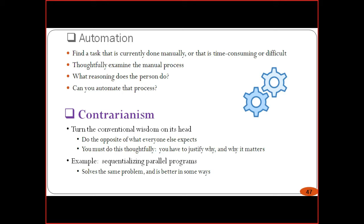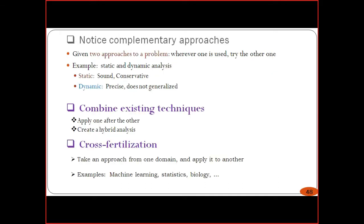Similarly, sequential and parallel programs can solve the same problem in better ways. For example, every country is trying to find the COVID-19 vaccine — the problem is the same and many people are using the same approaches. Some are getting correct results, but due to competition for credit in the entire world, nobody is sharing their methods with all. Using better practices is very helpful in finding the vaccine for COVID-19.